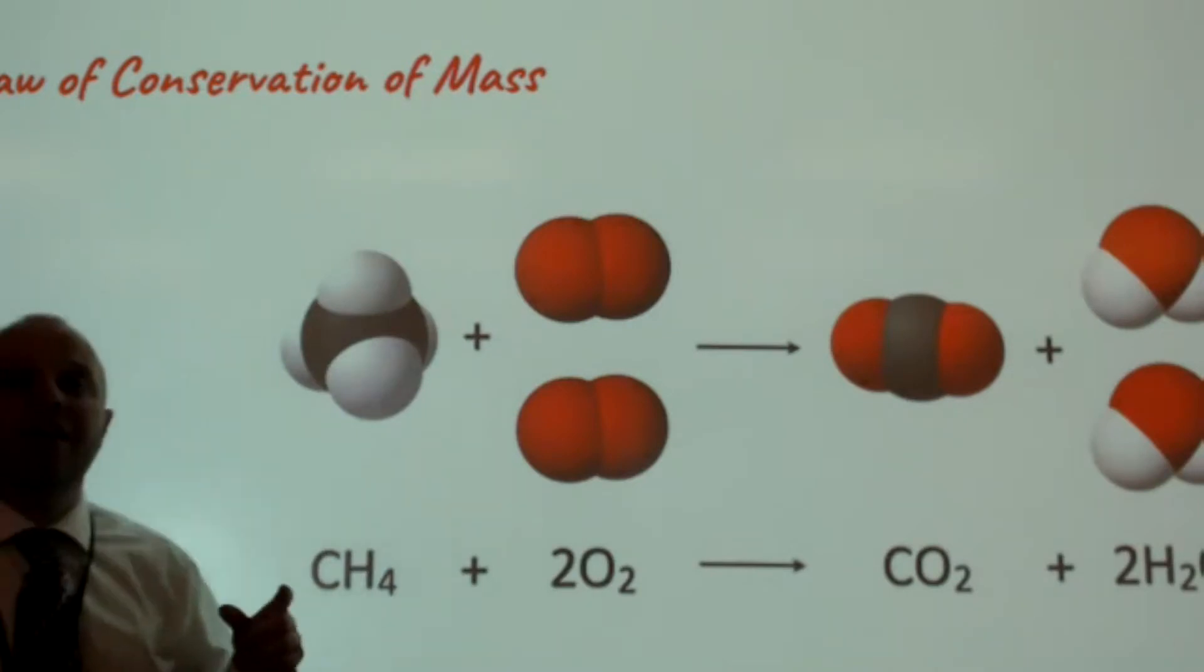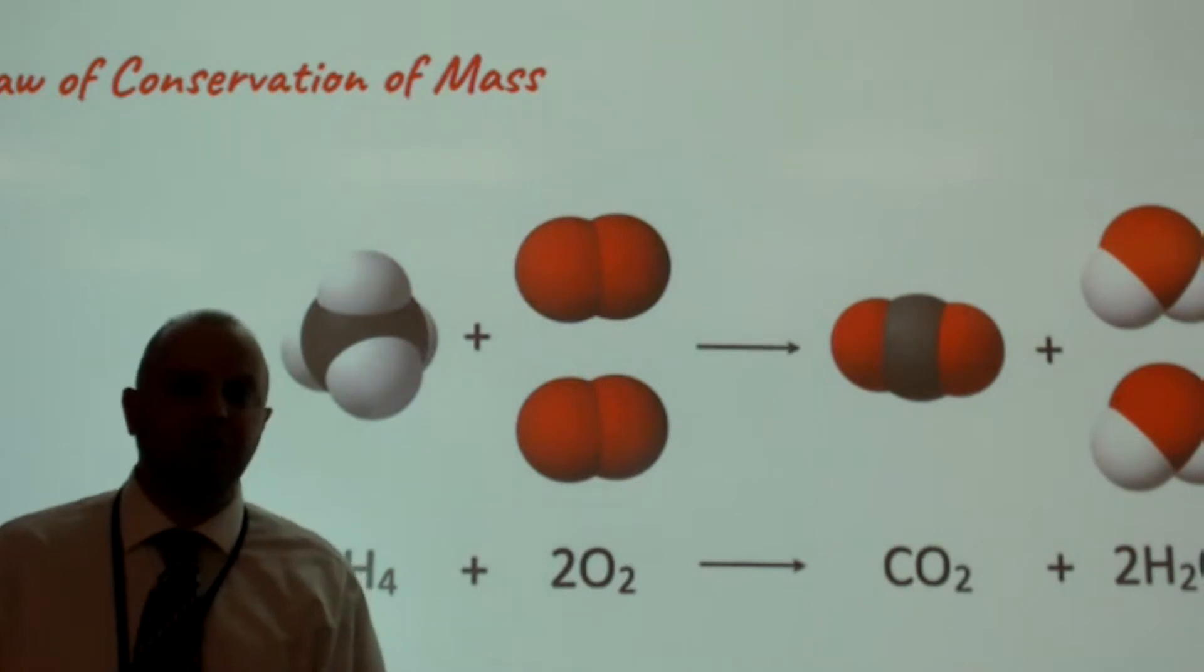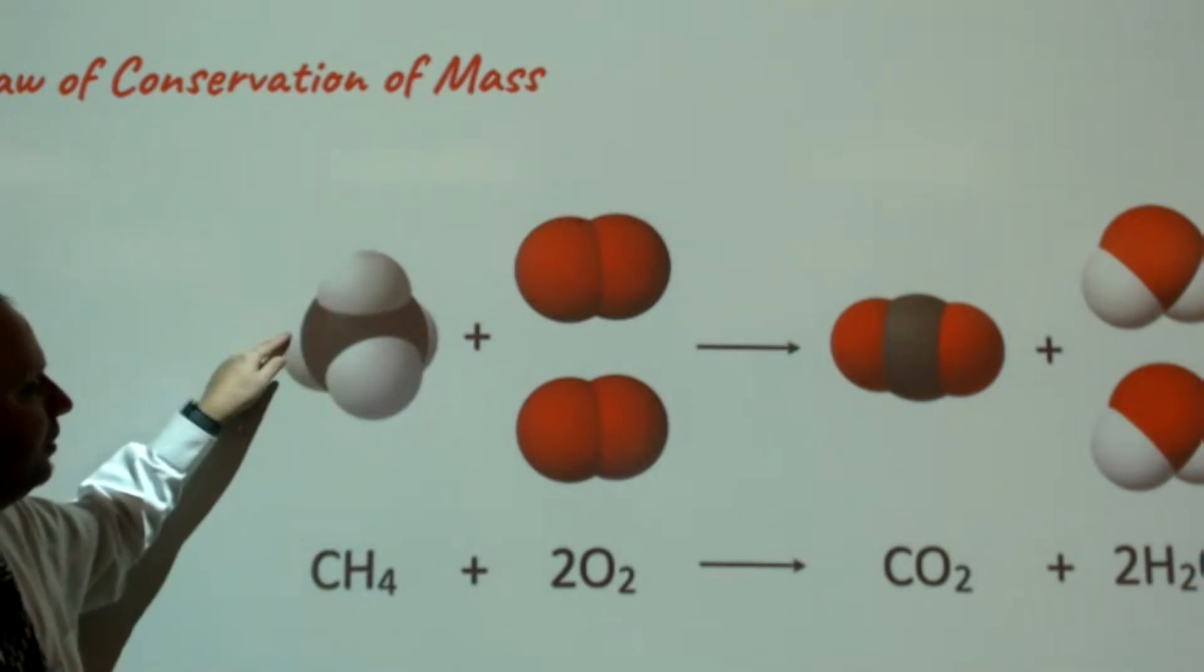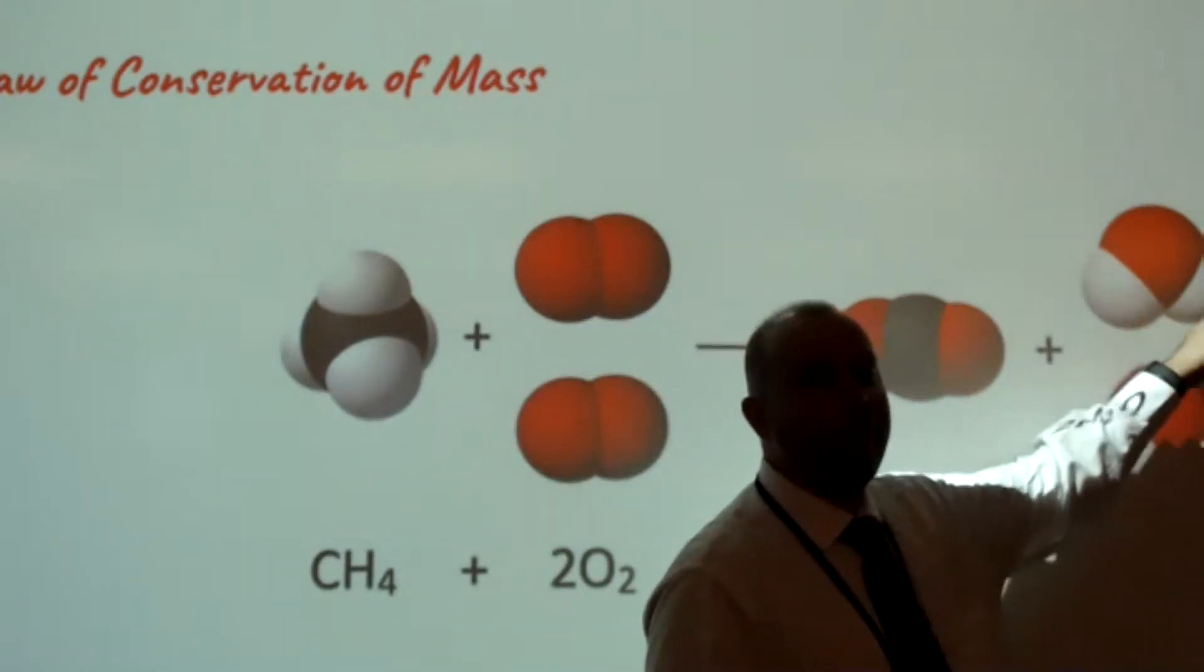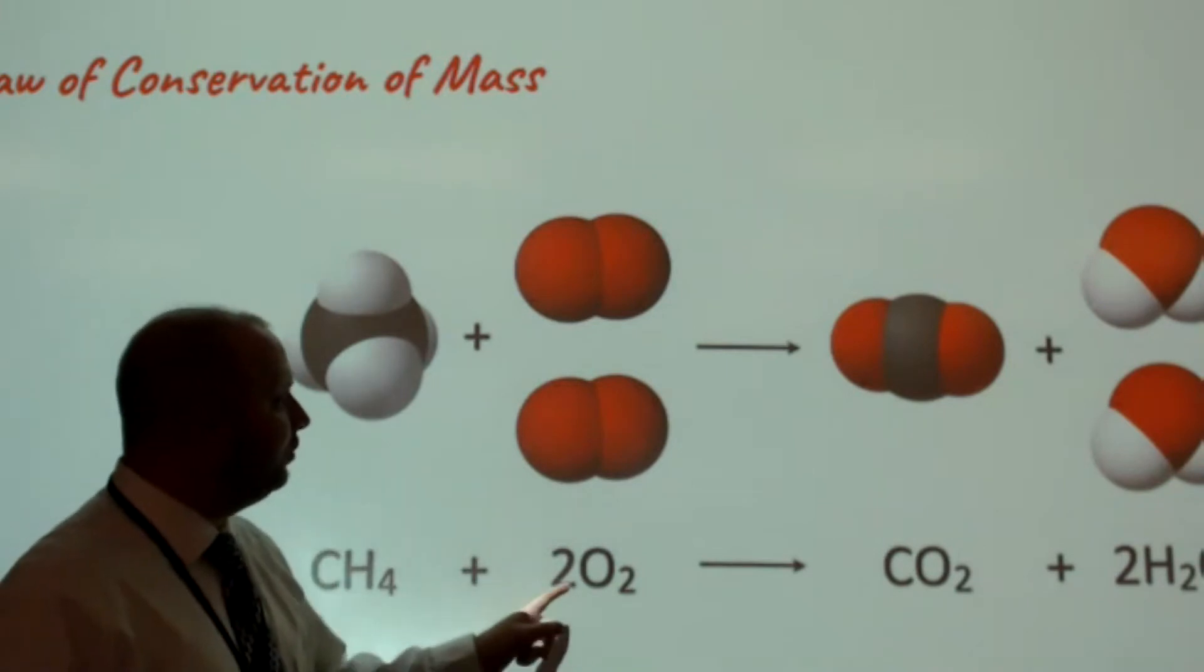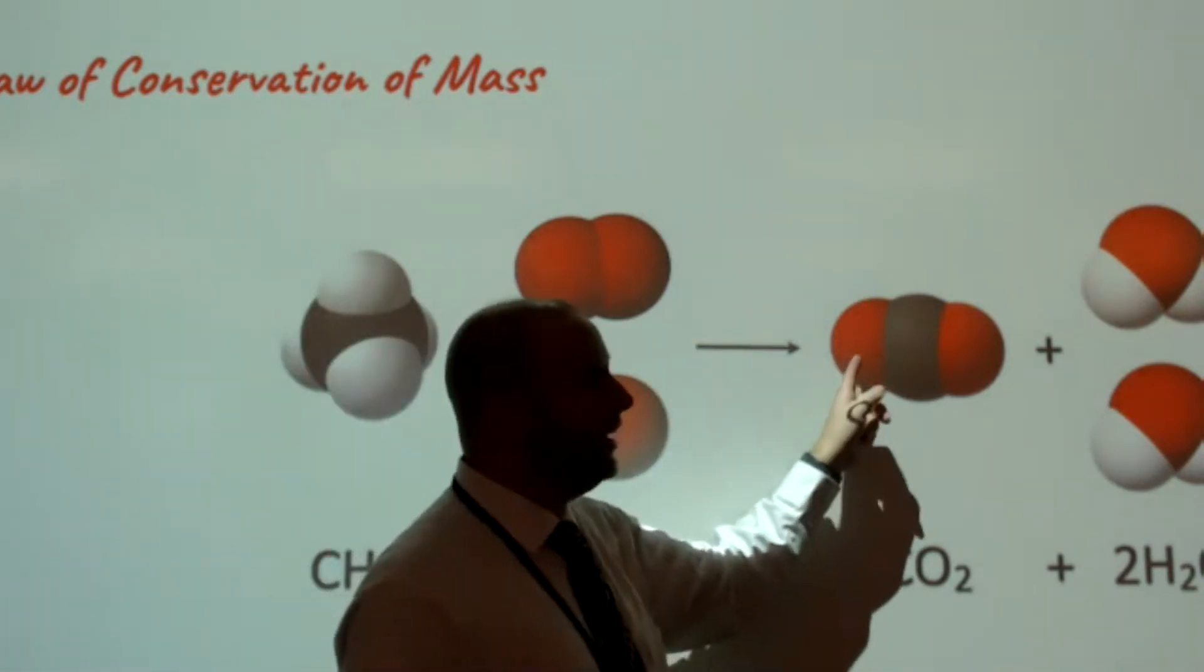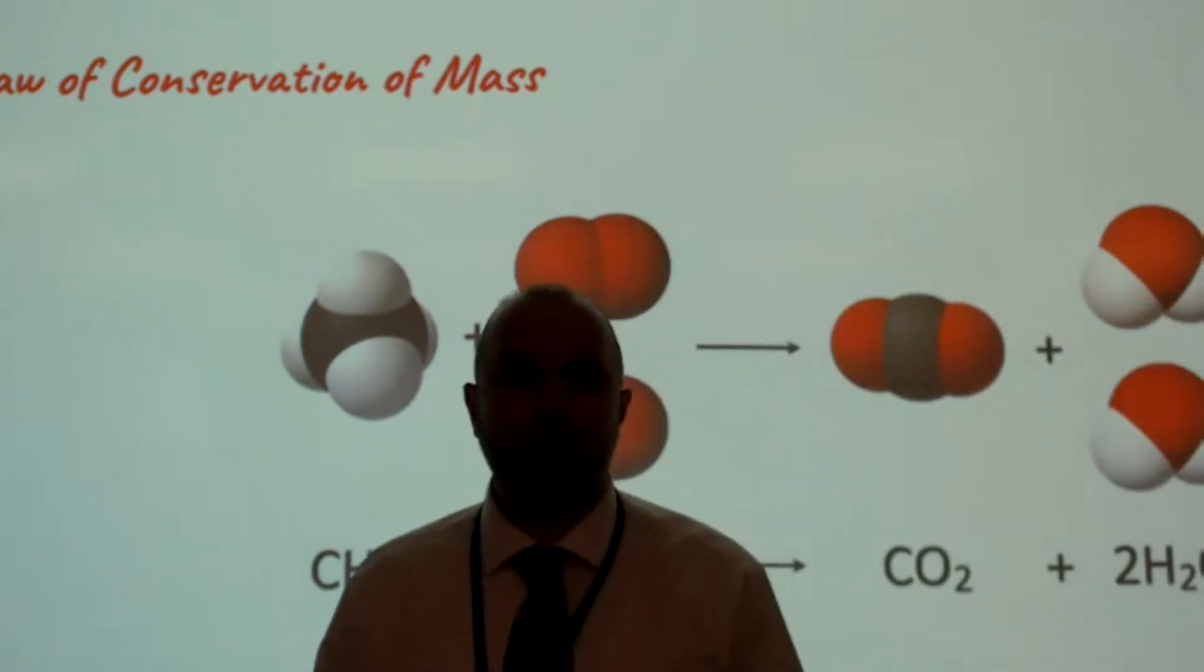If we look at this on an atomic level, this is a reaction for the combustion of methane. If you notice, we have one carbon on the left side here and four hydrogens. On the right side, we have one carbon and we still have our four hydrogens. In terms of the number of oxygens, we have two O2s, or one, two, three, four atoms of oxygen. And on the right side, the product side, we still have one, two, three, four atoms of oxygen.